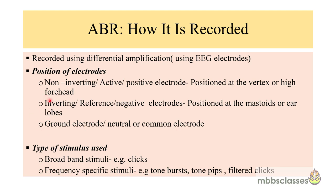Now let us come to the technical part of the recordings. These ABRs are recorded using differential amplification and we use EEG electrodes. Differential amplification means that when we are recording the waveforms, the other electrical activity generated in the brain is eliminated, and we get recordings only of the auditory pathway up to the brainstem.